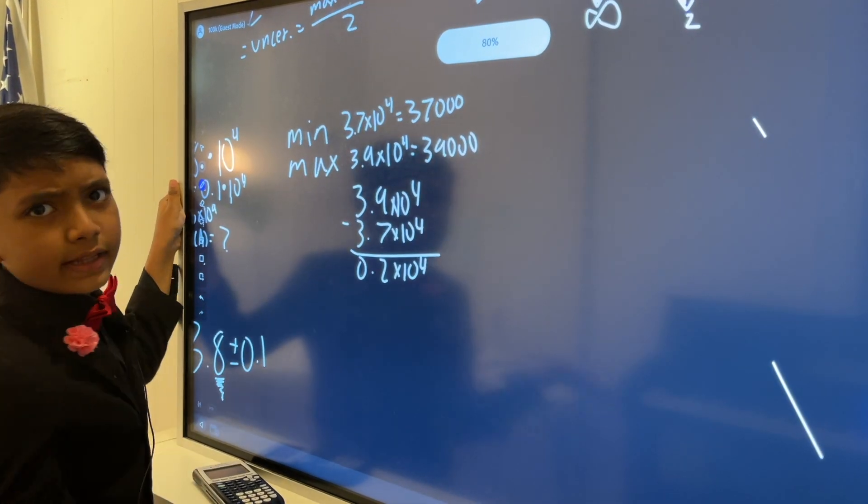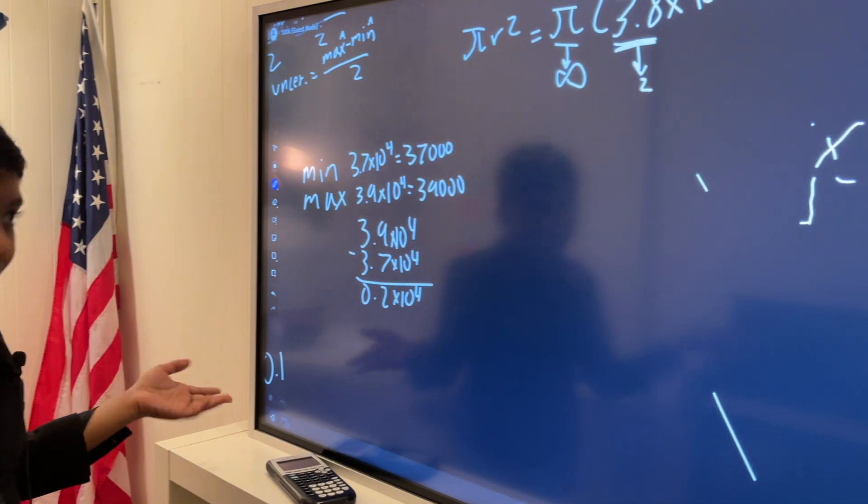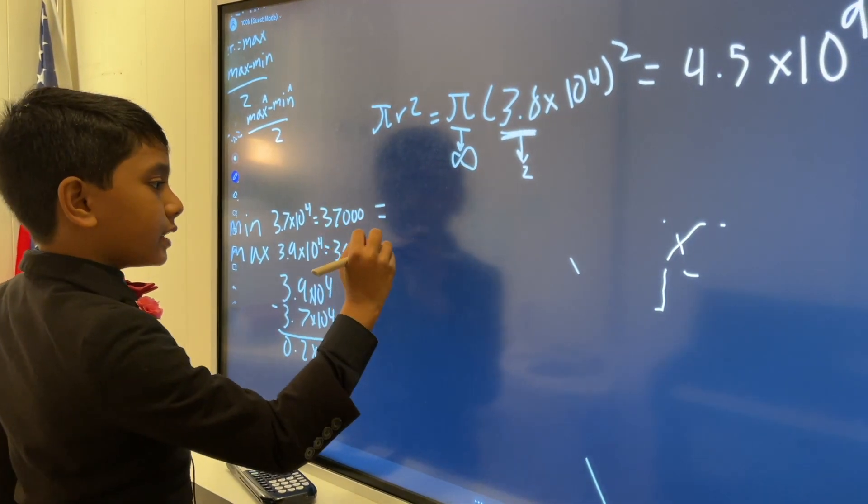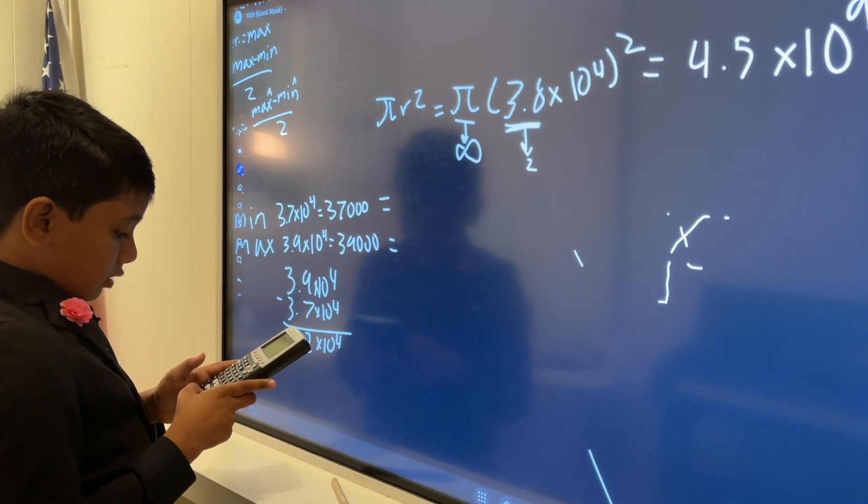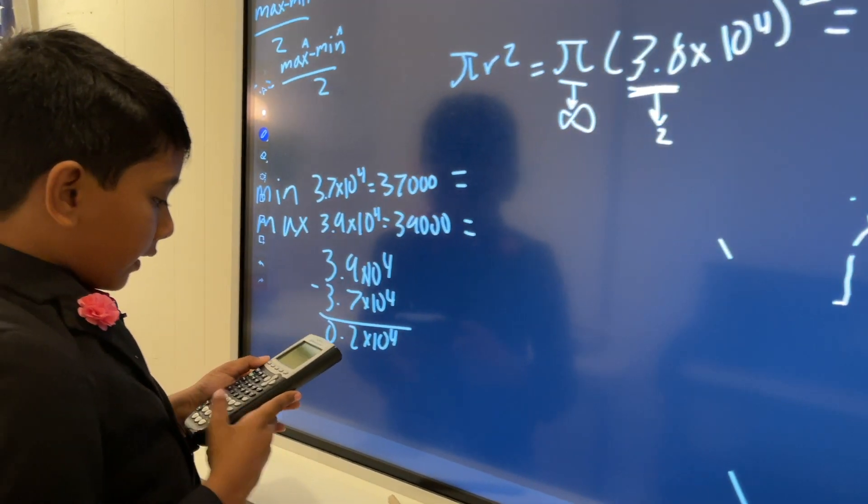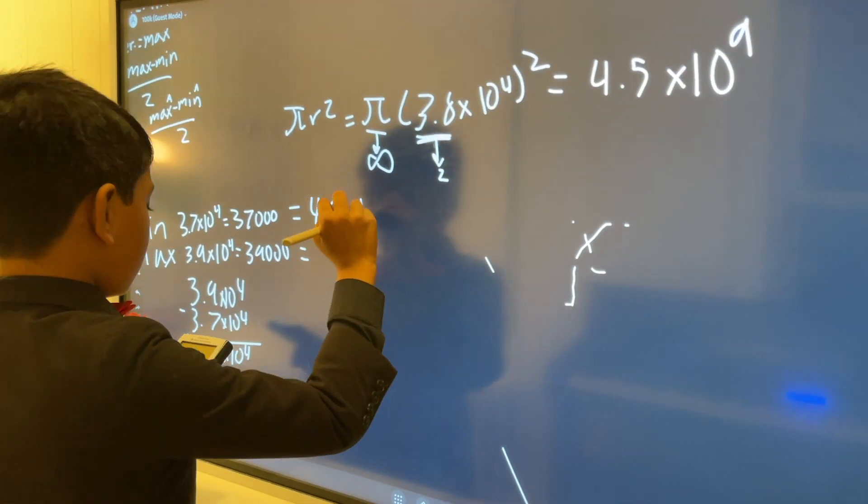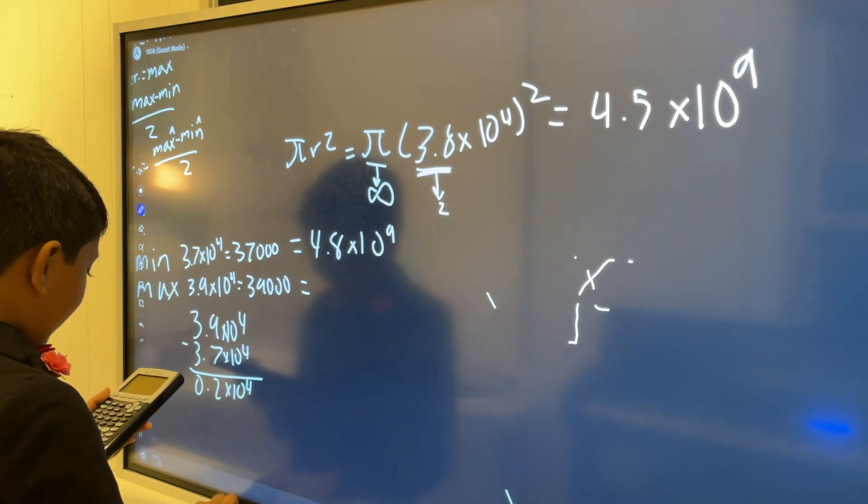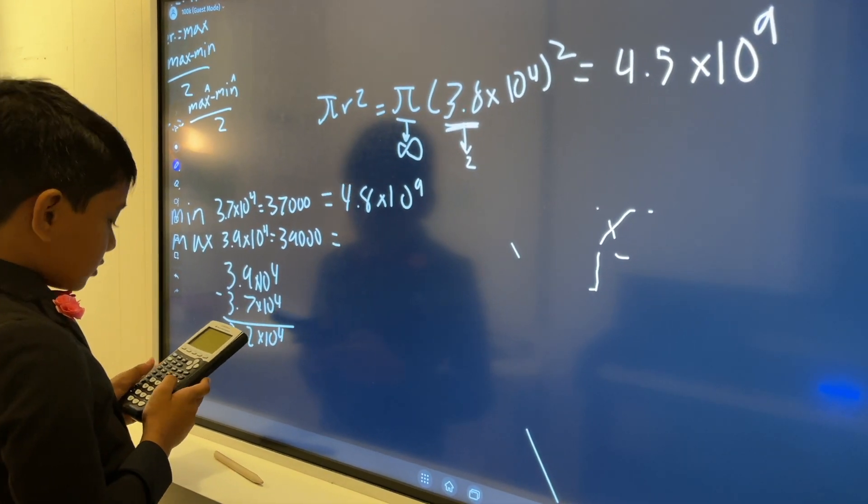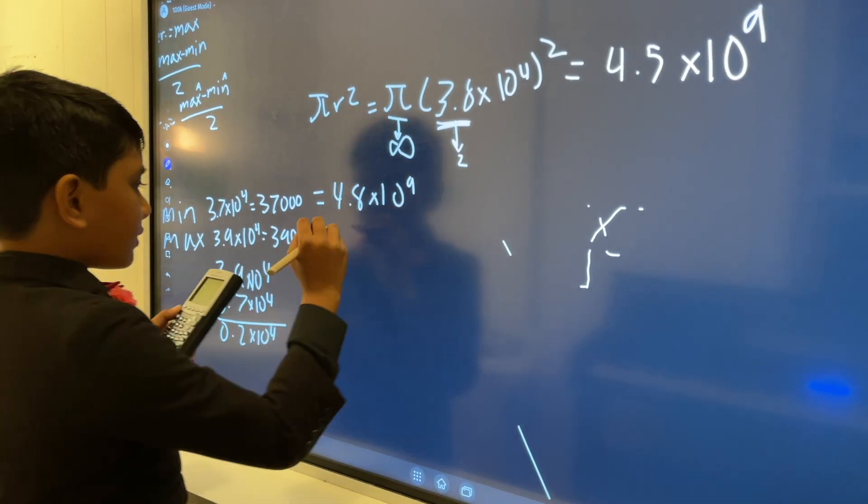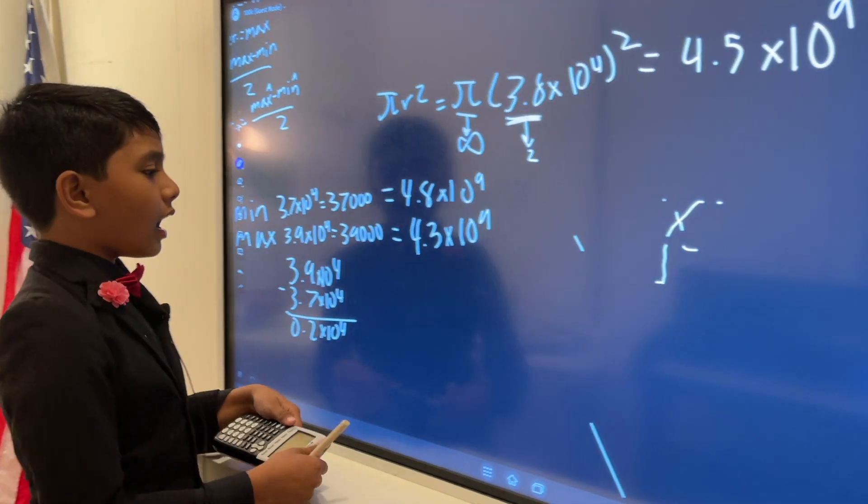So 4.5 times 10 to the 9. Now what's the uncertainty in our area? Well to do that we'll have to go back to our min and our max and calculate our area using those radiuses too. So now we put 39,000 squared times pi and that gives us 4.8 times 10 to the 9 and when we plug in 37,000 squared times pi that gives us 4.3 times 10 to the 9.